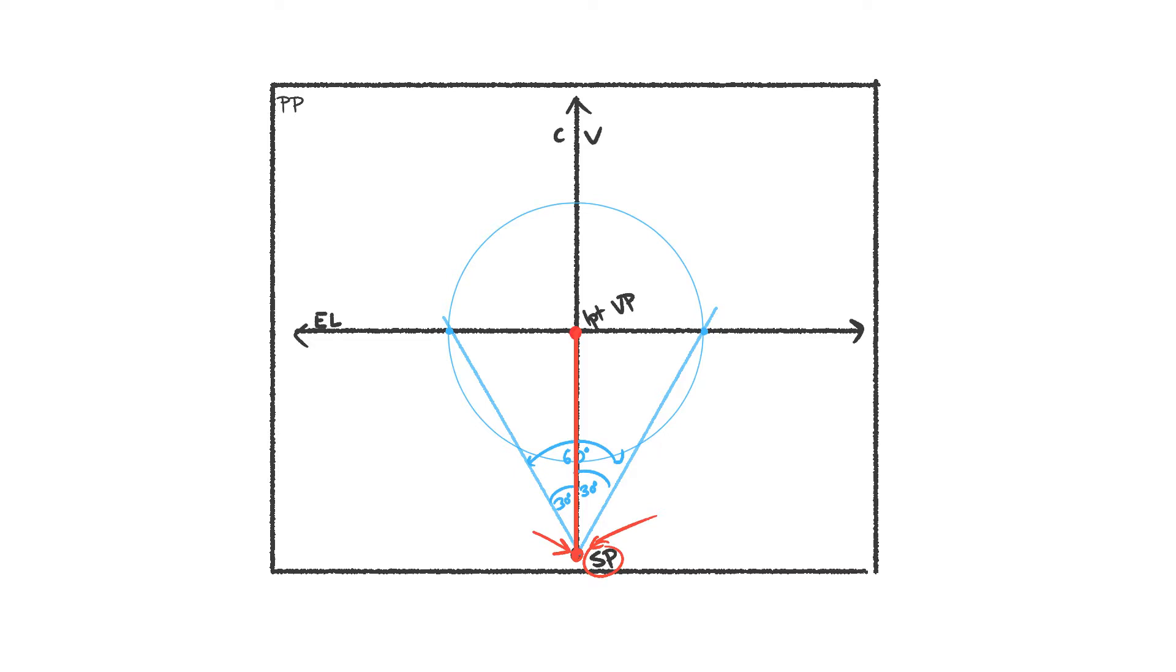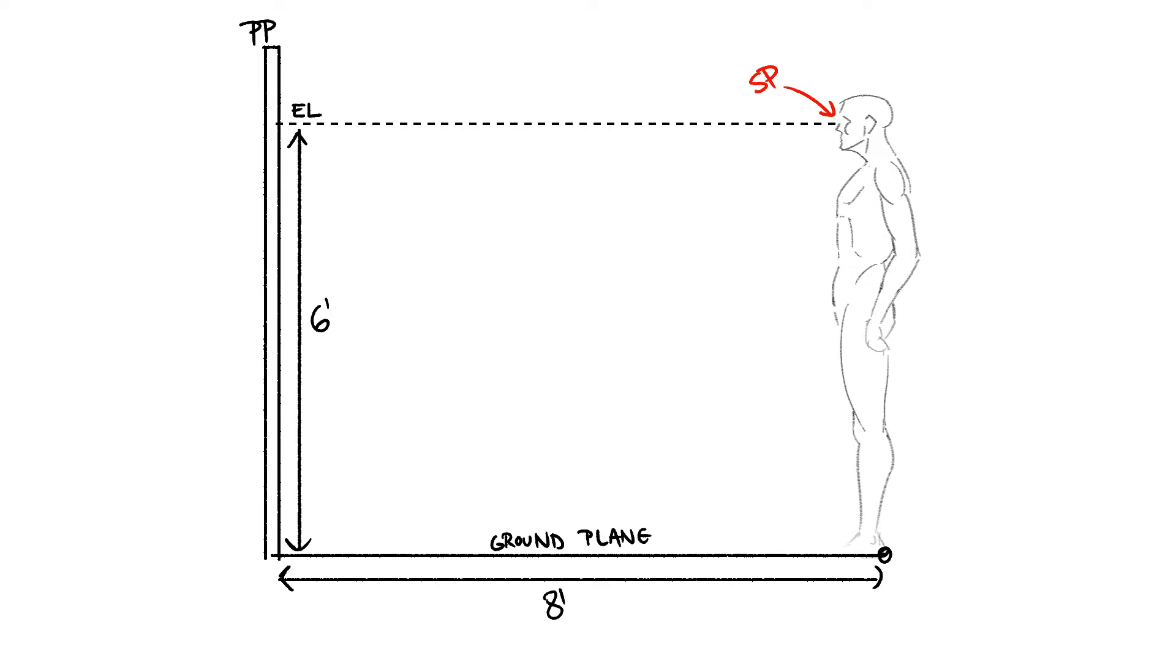We do this because we can't exactly draw our viewpoint coming out of the page. One, it wouldn't have any perspective to it being that it's a perfectly straight line coming out towards us from the center of vision, and two, it would get in the way. So, in this way, our eye level tells us the height at which we are viewing our subject, and the station point tells us the distance we are from the picture plane, as shown in the diagram here.